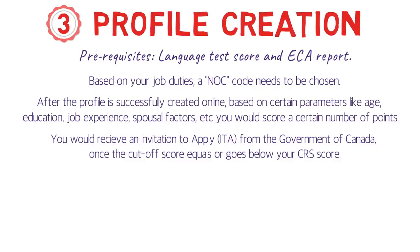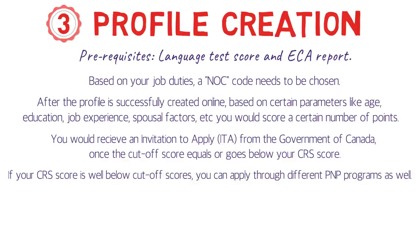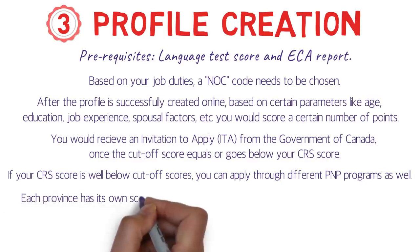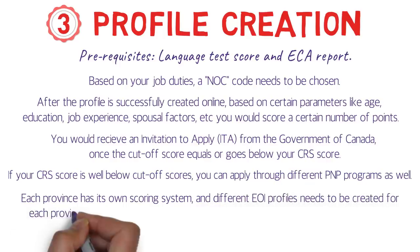There is also a tie-breaking rule, but that won't be covered in depth here. If your CRS score is low — say in the 350s, 380s, or early 400s — you can apply through different Provincial Nominee Program (PNP) programs. Each province has its own scoring system, and separate EOI (Expression of Interest) profiles need to be created on each province's website.